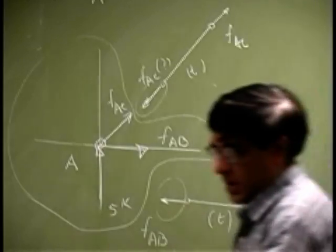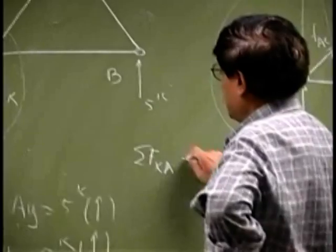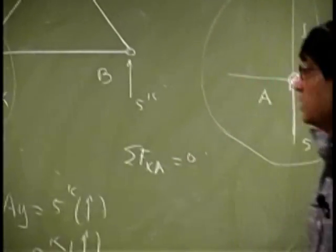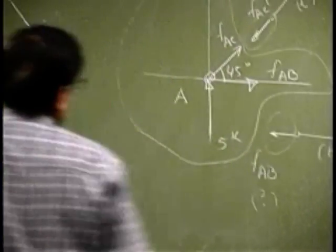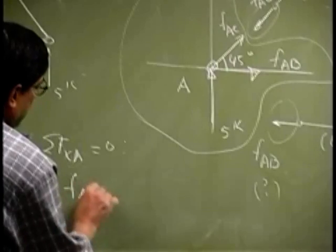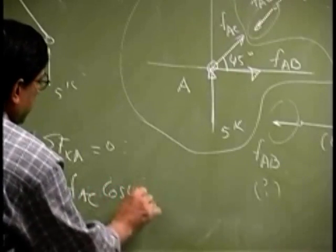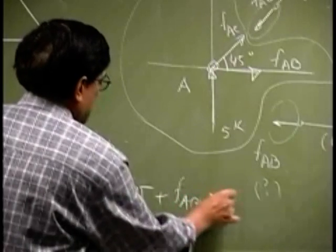Now once I have that, I could be able to sum my forces X at A. We know this angle as 45, we know this angle as 45. So your force equation becomes, let's say FAC cosine 45 plus FAB as 0.